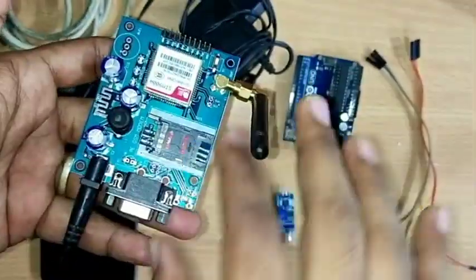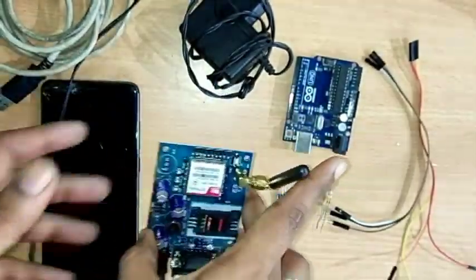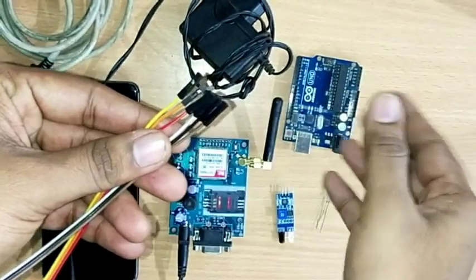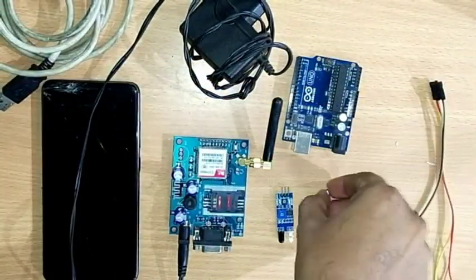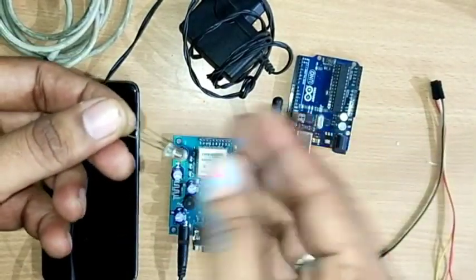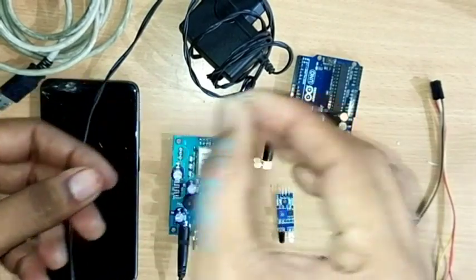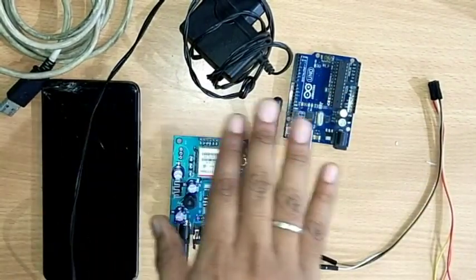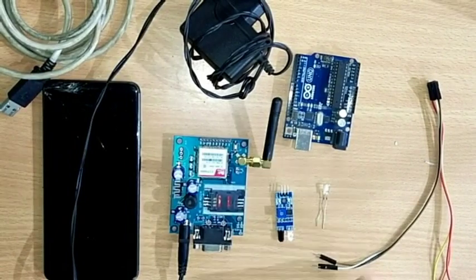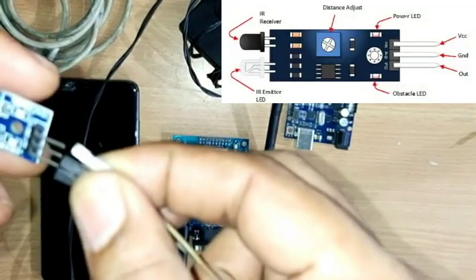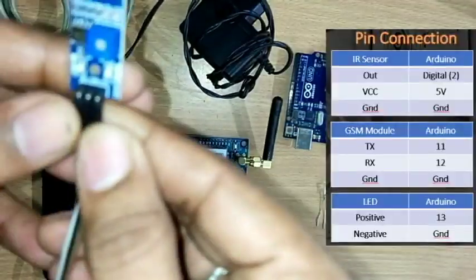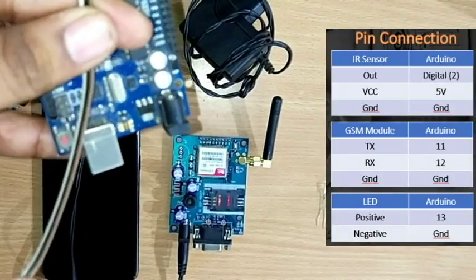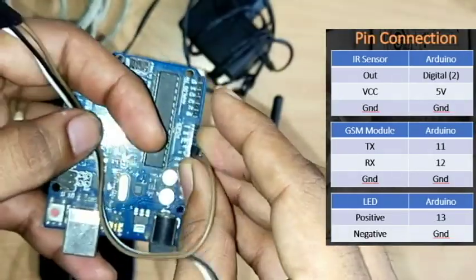If you look at this circuit, we already have a GSM tutorial so you can refer to that. We use male-to-female jumper wires. The IR sensor has 3 pins: VCC, Ground, and Output. Connect VCC to the 5V pin on the Arduino board and Ground to GND.